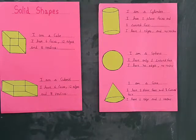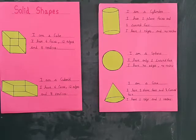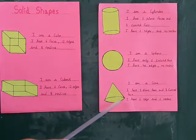Solid shapes have three measurements: length, breadth and height. It is also known as 3D shapes. For example, cube, cuboid, cylinder, sphere and cone.